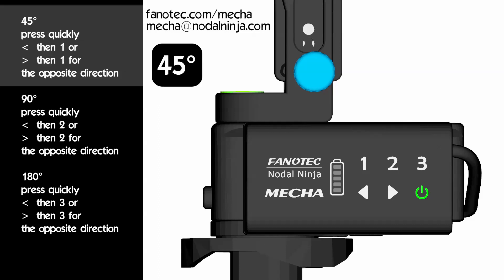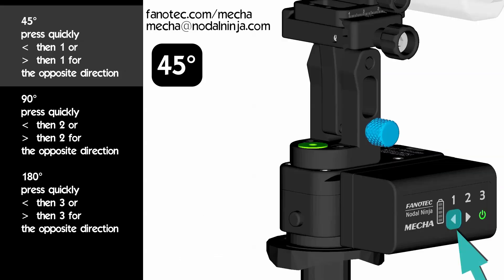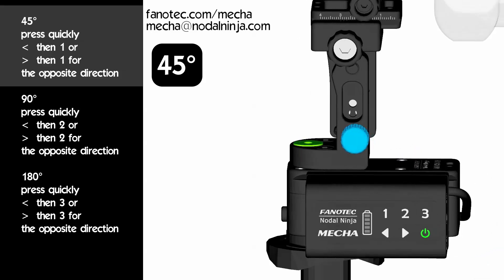For 45 degree rotations, use the left arrow and 1. Or right arrow and 1. Press the left arrow button, then quickly press 1. Press the right arrow button, then quickly press 1, for the opposite direction.